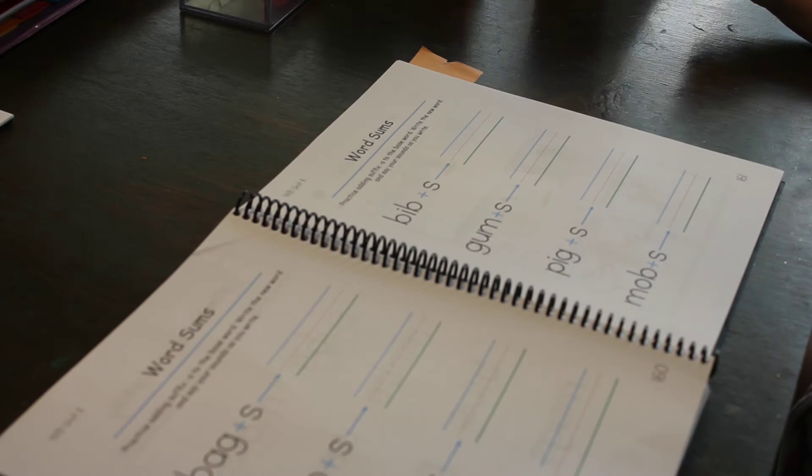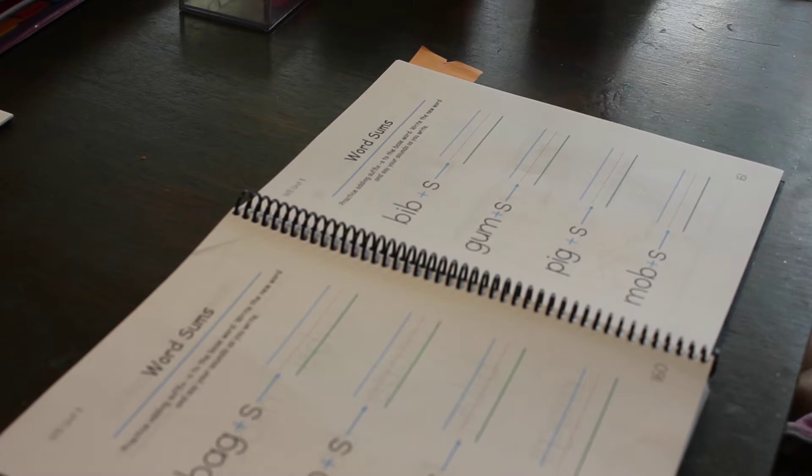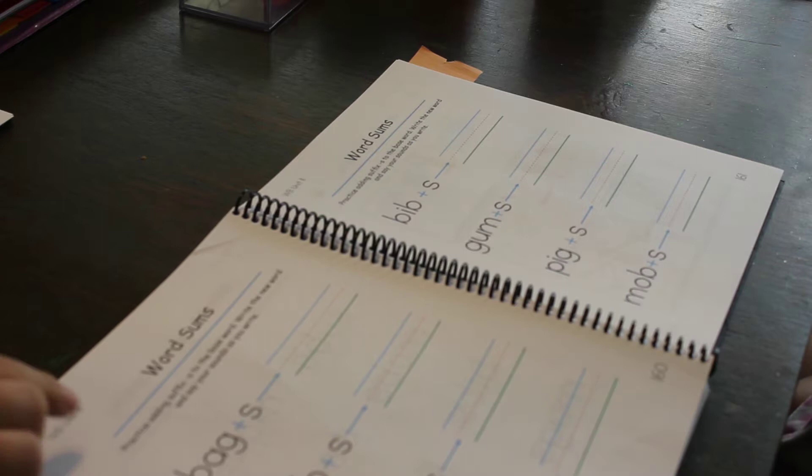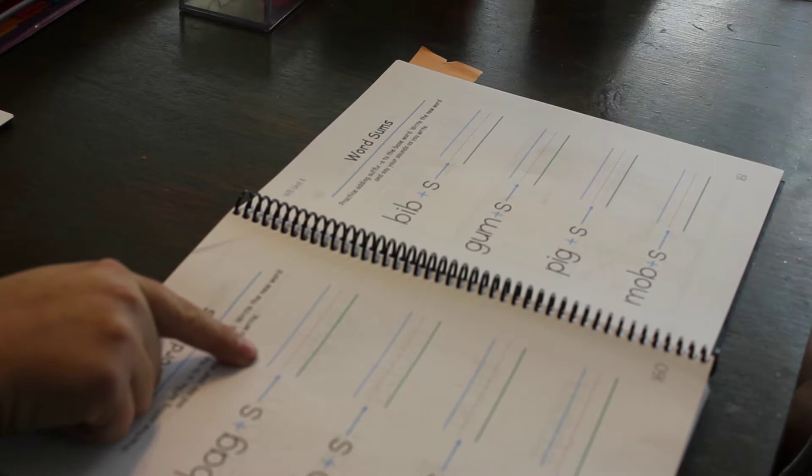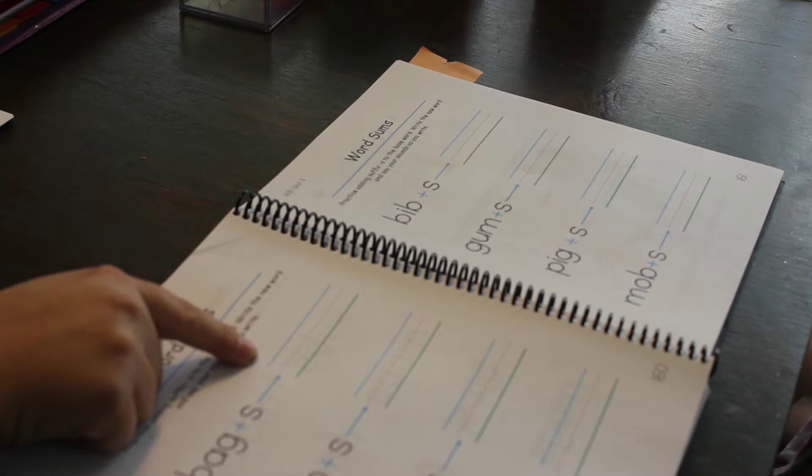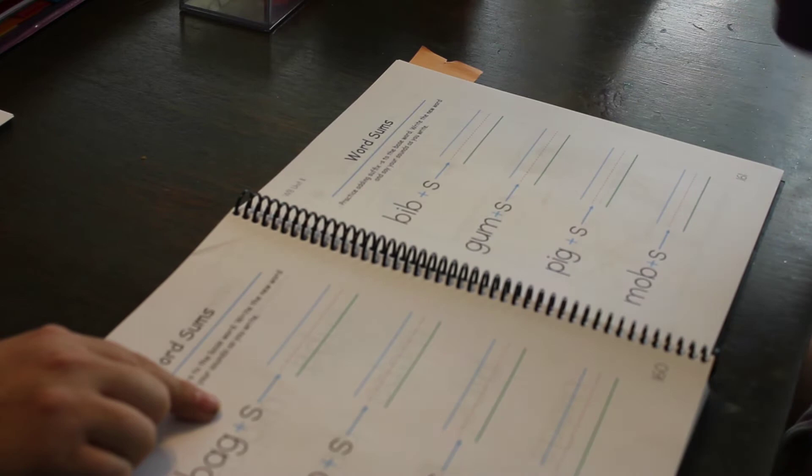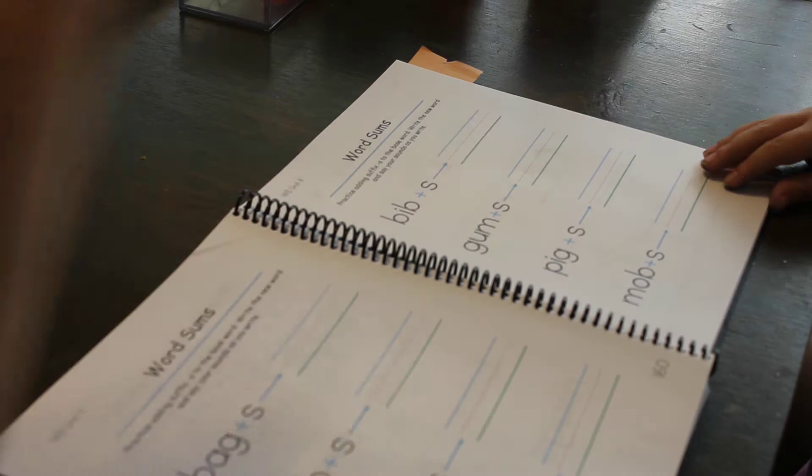When we add two things together we call it a sum. When we add word parts together it is called a word sum. In a word sum we show each separate word part and then the whole word put together. Let's look at the word sums. We can see that the base word 'bag' plus the suffix 's' - if we put these together we have a new word. What is it? Bags. Good job.